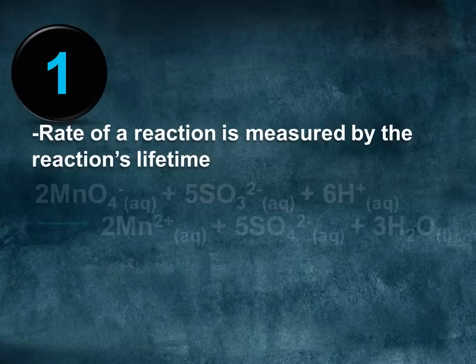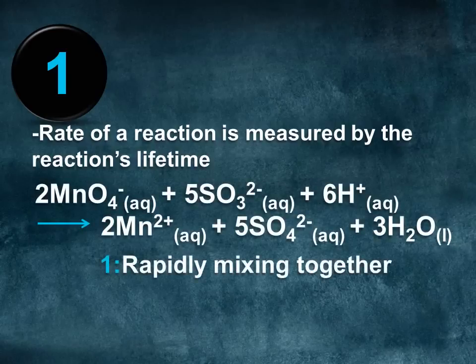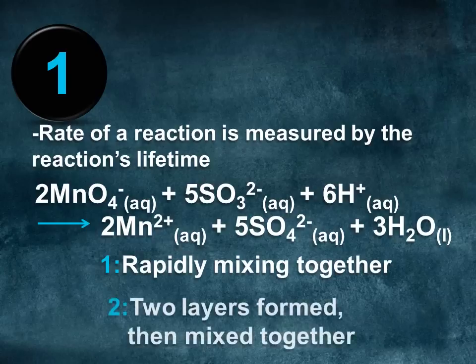The reduction of purple permanganate ions by sulphide ions was observed by, firstly, rapidly mixing the reactants together, and secondly, forming two separate layers of the reactants and then mixing them together.